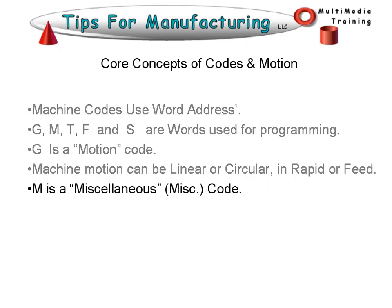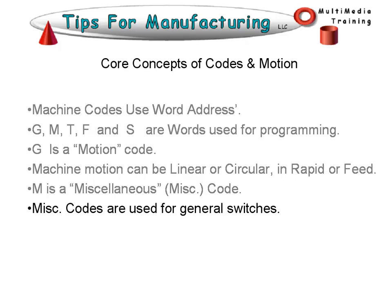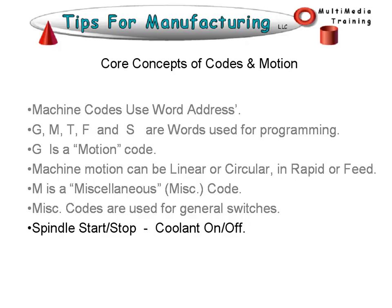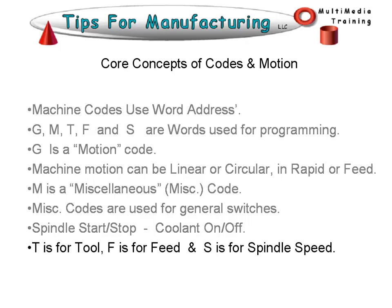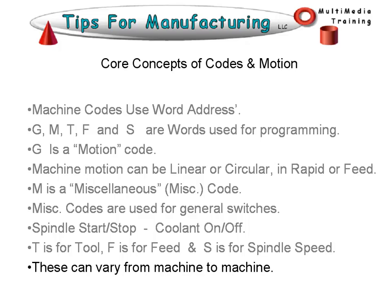M is a miscellaneous code. Miscellaneous codes are used for general switches — spindle start, spindle stop, coolant on, coolant off. Those are the kind of things that you need to switch or change the condition of. T is the word used for tools. F is used for feed rates. S is used for spindle speeds. These can vary from machine to machine, but most of these words are pretty common.